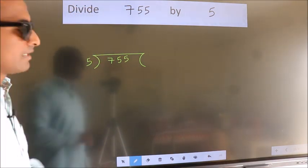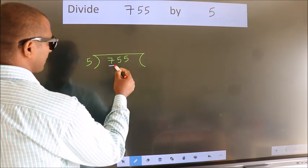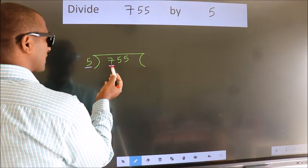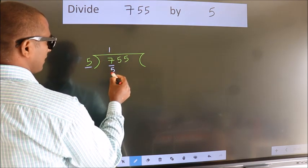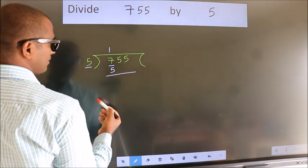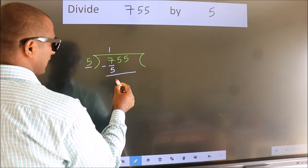Next, here we have 7, here 5. A number close to 7 in 5 table is 5 once 5. Now we should subtract. We get 2.